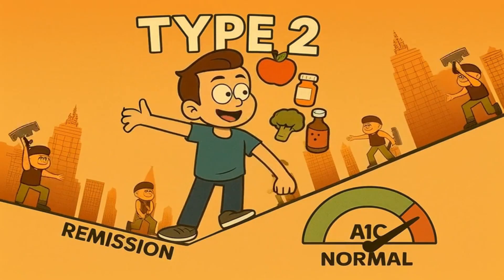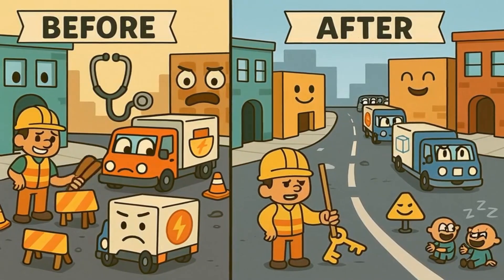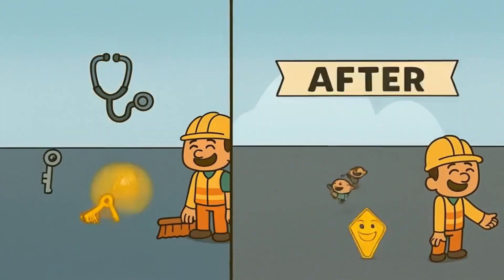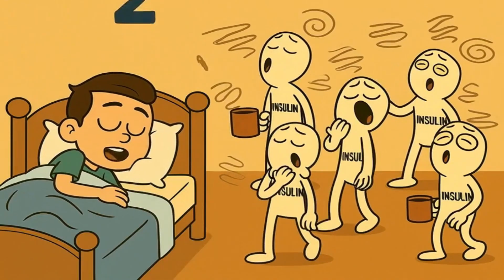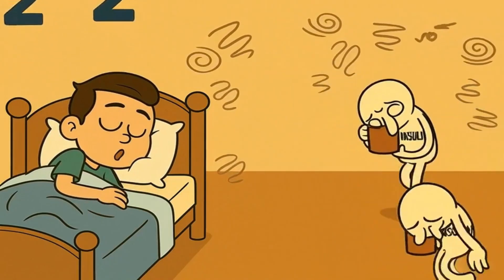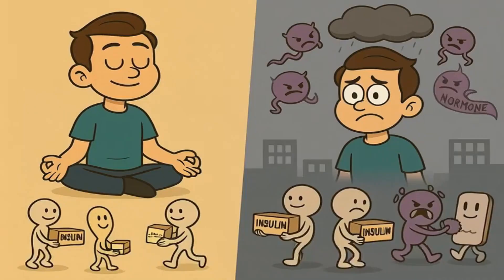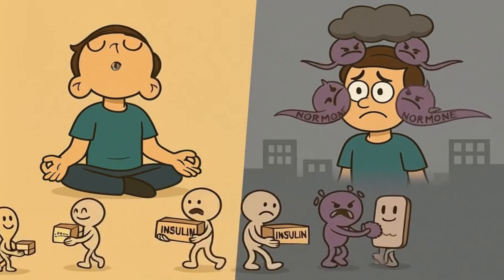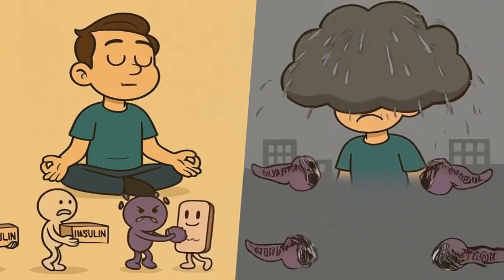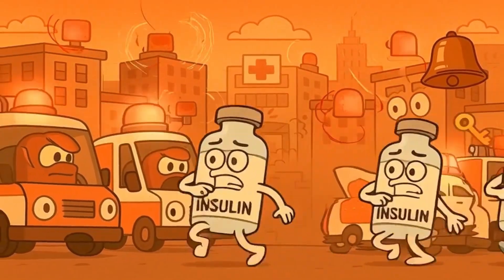Losing weight, if you need to, can help fix some of the underlying problems in type 2 diabetes — it's like decluttering your city so the delivery trucks can move around more easily and the insulin workers don't have to work as hard. Getting enough sleep is important as well. When you don't sleep well, it's like your insulin workers show up to work tired and cranky, and the whole delivery system becomes less efficient. Managing stress also matters. When you're stressed, your body releases hormones that make it harder for the insulin workers to do their jobs — it's like having a citywide emergency that makes all the workers distracted and less effective.